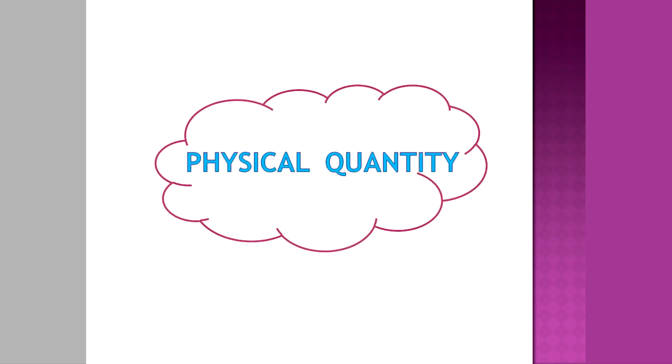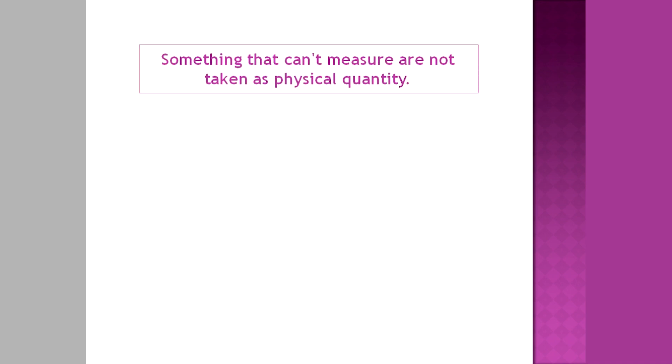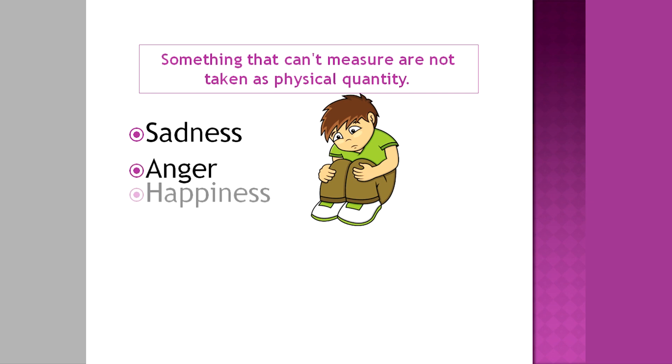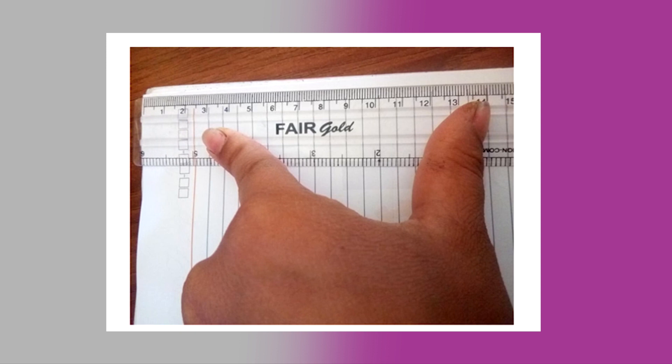Children, you may be confused with the term physical quantity. Physical quantity means the things which we can measure, for example, mass, length, time, temperature, weight, etc. The things which we cannot measure are not taken as physical quantities, just like feelings like happiness, sadness, anger, joy, excitement, and so on.